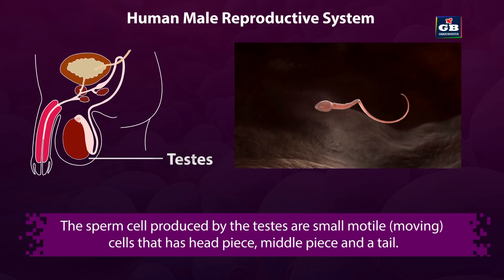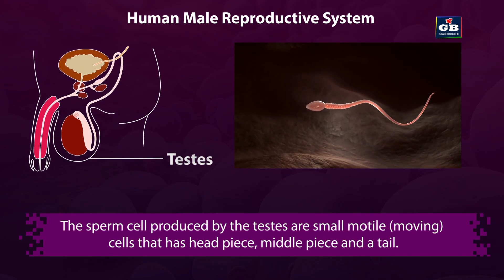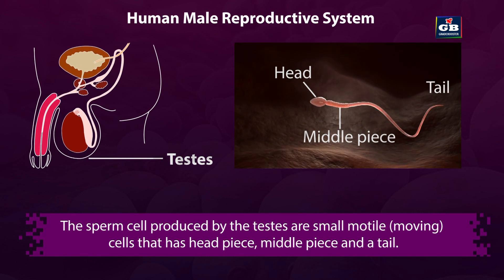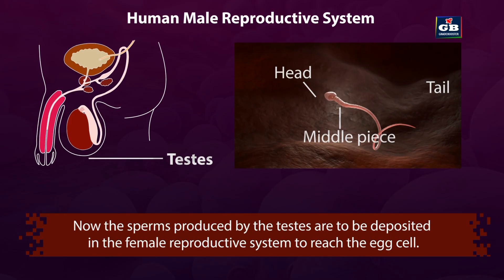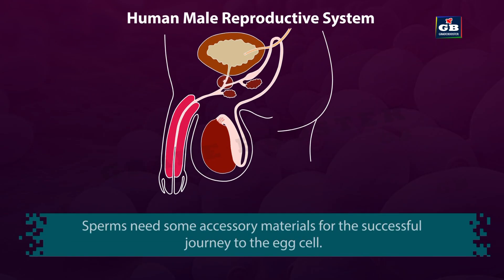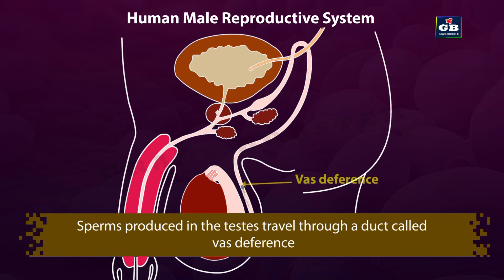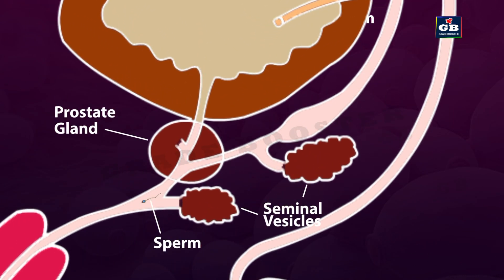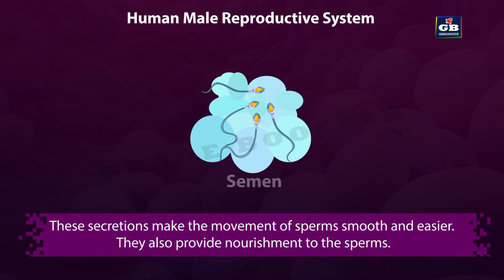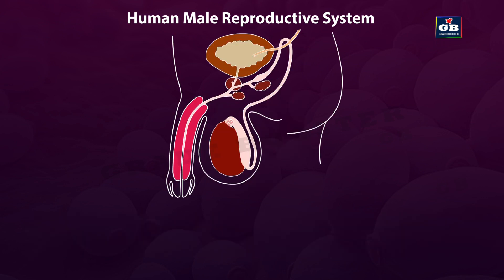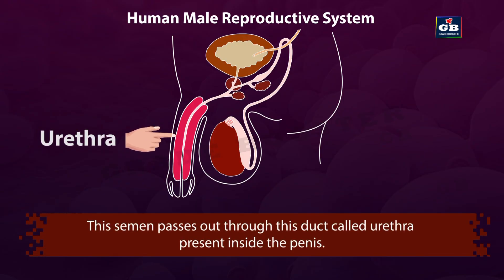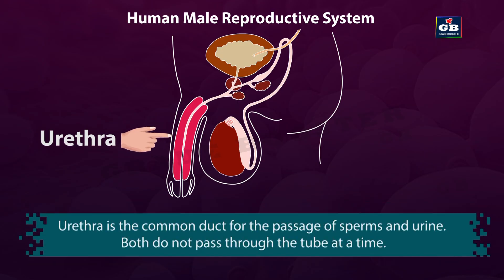The sperm cells produced by the testes are small and motile. Each sperm cell has a head piece, middle piece, and a tail. Sperms produced by the testes travel through a duct called vas deferens. At this point, secretions from the seminal vesicles and prostate gland are added to the sperms. These secretions and sperms together are called semen. These secretions make the movement of sperm smooth and easier, and also provide nourishment to the sperms. This semen passes out through a duct called urethra, which is present inside the penis. Urethra is the common duct for the passage of sperms and urine, but both do not pass at the same time.